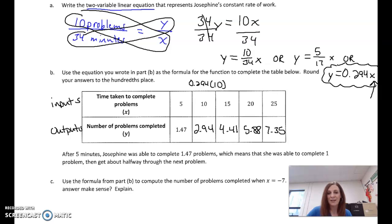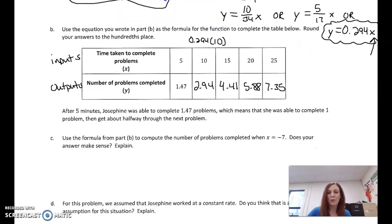Now, it says after 5 minutes, she was able to complete 1.47 problems, which really doesn't make sense. I mean, it makes sense, but it says here she completed one problem and about half of the next. So it says use the formula from part B, this right here.